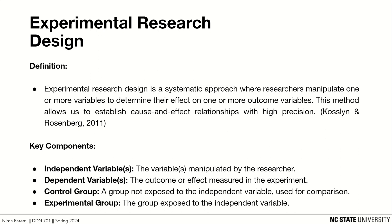Another key element of experimental research design is sampling. Choosing a sample strategy in research is essential because it ensures that study findings accurately represent the larger population we are interested in and fortifies the reliability and validity of these findings. For instance, if we are studying sports performance, we want to make sure our sample includes athletes from diverse characteristics like age, gender, skill level, and training background. This diversity helps us draw conclusions that broaden the range of athletes and the generalization of our results.